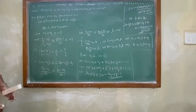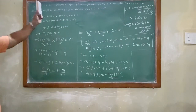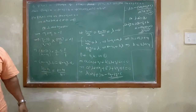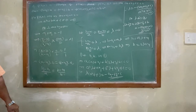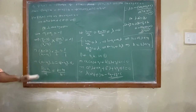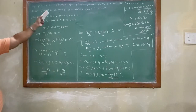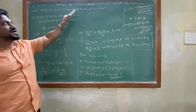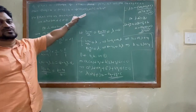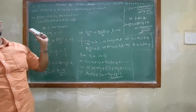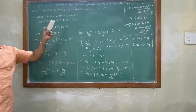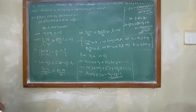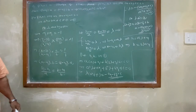What is given? If Q(h,k) is the image of point P(x1,y1) on the line, then (h-x1)/a = (k-y1)/b = -2·(ax1+by1+c)/(a²+b²). Same structure as before, but with -2 instead of -1. What is the meaning of image?